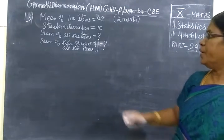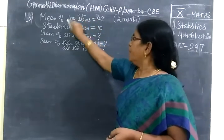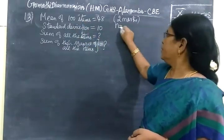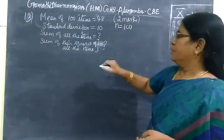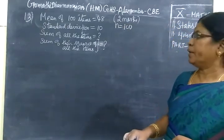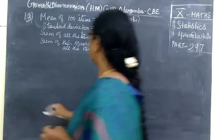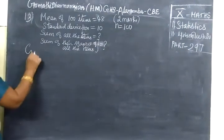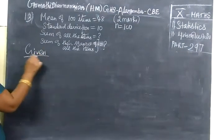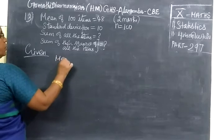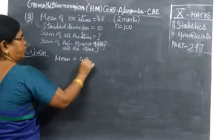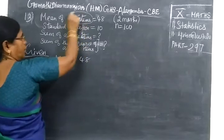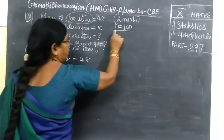It is given mean of 100 items. 100 items means N equal to 100. Mean means X bar, X bar equal to 48. So given mean equal to 48. It is 100 items, 100 items means N.